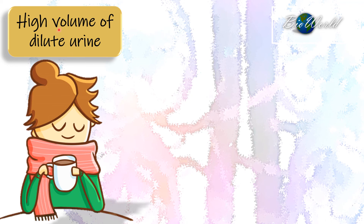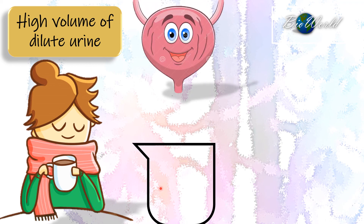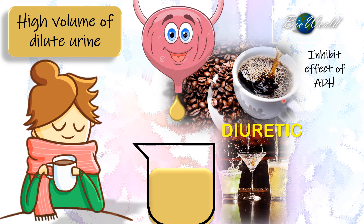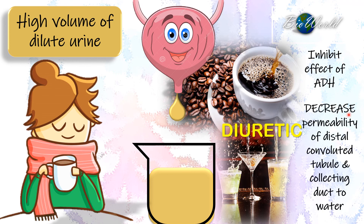We now know why we produce a high volume of dilute urine when we drink excess water. But how do we explain the high volume of dilute urine when drinking coffee? The effect of coffee on our urinary system is the same as that of alcohol — both are diuretics. By diuretic, we mean these drinks inhibit the effect of ADH. The presence of caffeine in coffee and chemicals in alcohol decrease the permeability of the distal convoluted tubules and collecting ducts to water, so the water forming urine stays in the collecting duct and is excreted as high-volume, dilute urine.